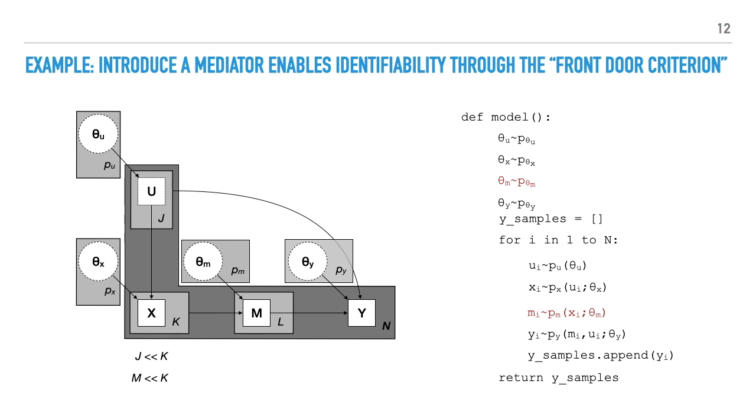Going back to our latent U model, if we add an intermediate variable between X and Y, the model becomes identifiable according to the do-calculus. It becomes identifiable through a do-calculus-derived condition called the front-door criterion. The new M variable is called a mediator in the parlance of causal inference.